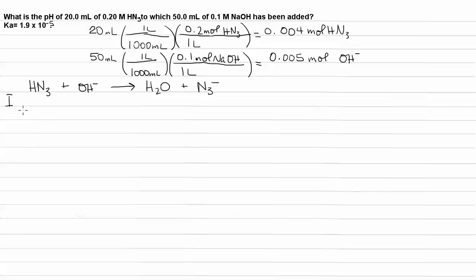So, our initial number of moles in this IC final reaction table, our initial moles, 0.004. And our initial moles of hydroxide, 0.005. We don't really care about water. It doesn't affect the pH. And initially, we have 0 moles of N3 minus.